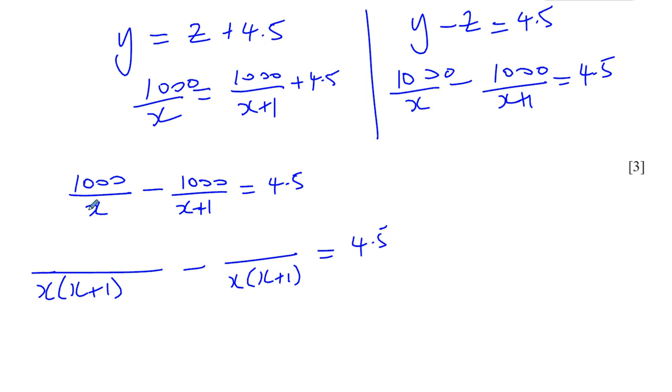Now I've got to make the numerators equivalent. So I multiplied x by x plus 1 to make this. So I've got to multiply 1,000 by x plus 1 as well. So I've multiplied x plus 1 by x to give x times x plus 1. So I've got to multiply 1,000 by x as well. All right, so these two are equivalent fractions, which we can now write under one big denominator, x times x plus 1.